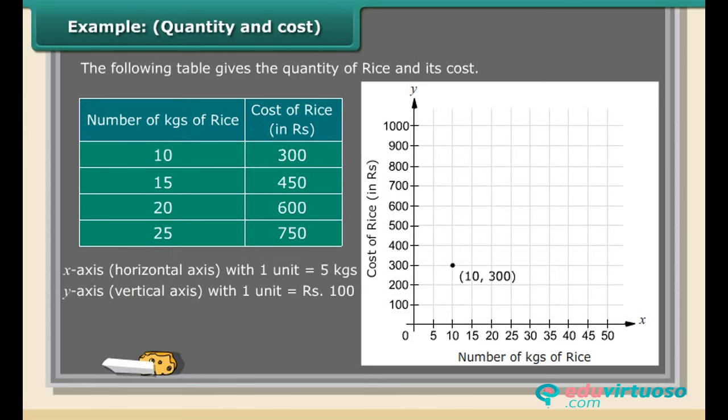3. Plot the points: (10, 300), (15, 450), (20, 600), (25, 750). 4. Join the points. The graph passed through the origin.